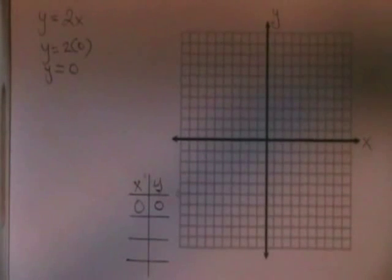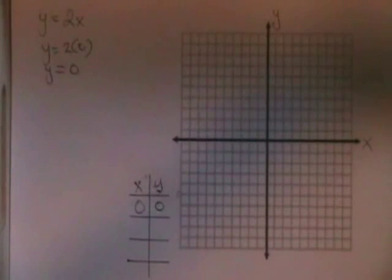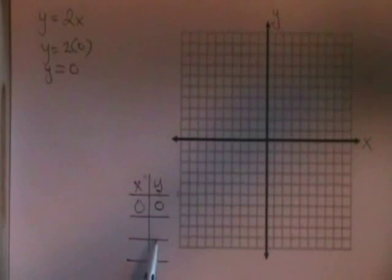What happens when you have an x term and a y term, but no constant term, is that you end up with the point 0,0, which means you have found both intercepts at once. It is no use finding another point with y equals 0. You will just find the point 0,0 over again.